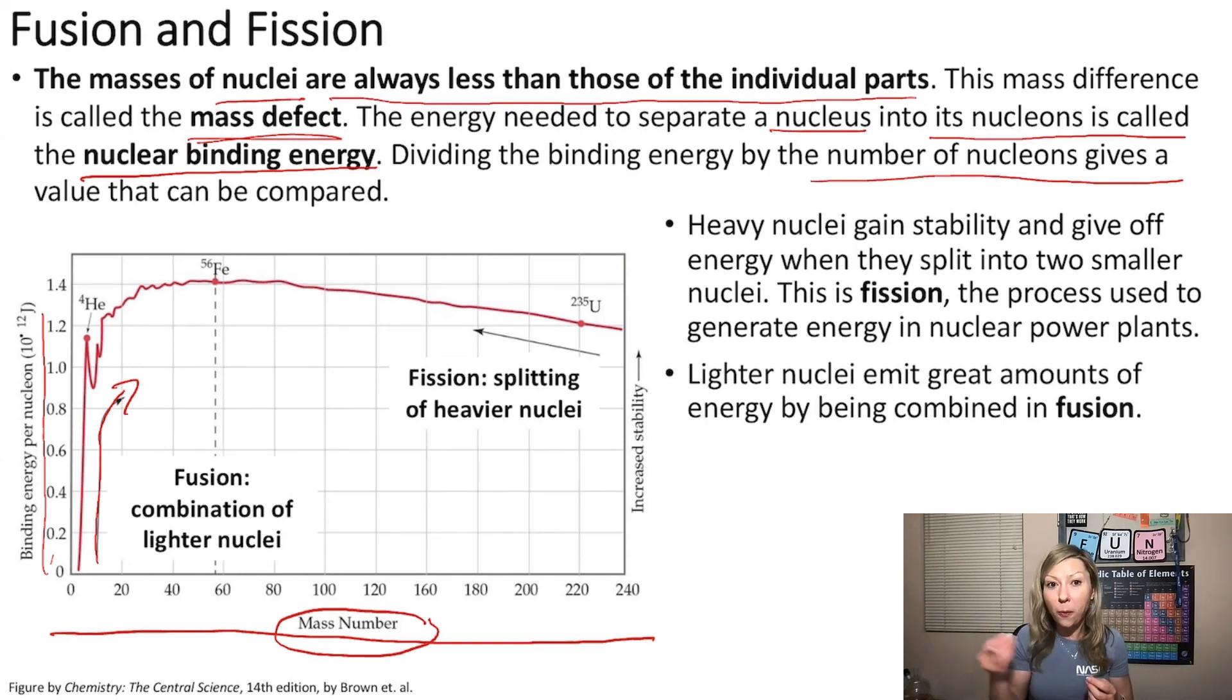Now, however, when we have heavy elements on this side, we are going to be able to stabilize these heavy nuclei by having them split into smaller pieces. And this process is actually called fission. The process used to generate energy in nuclear power plants. And the processes of fusion and fission are separated by iron 56 nucleus. Interesting, right? I hope this makes sense. See you in the next video.